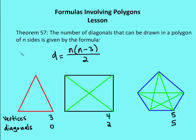The number of diagonals that can be drawn in a polygon of n sides is given by the formula: d equals the number of sides times the number of sides minus 3, divided by 2.